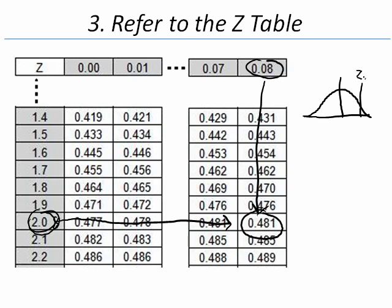So our z-score was 2.08. That is, the value was 2.08 standard deviations away from the mean. And this area is equal to .481. That's the proportion that it's equal to.